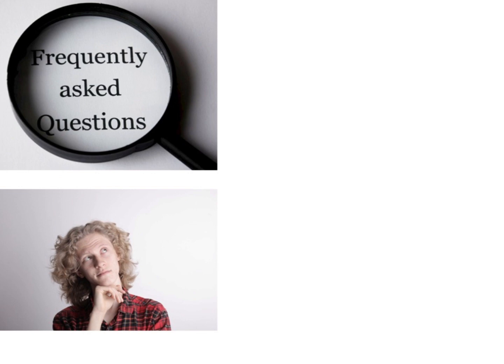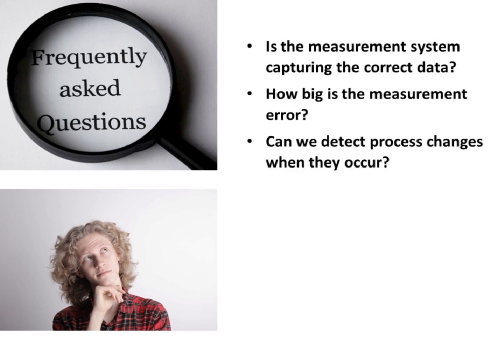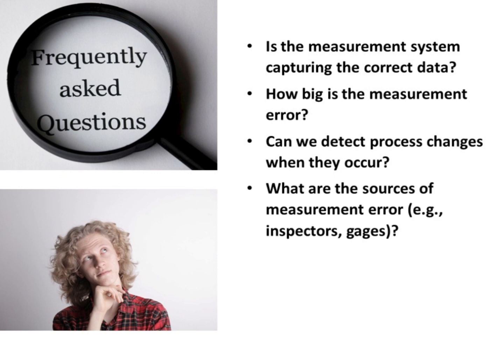If there are errors in our measurement system, we will be making decisions based on incorrect data. We could be making incorrect decisions or producing non-conforming parts. Process owners should ask themselves the following questions to better understand the capability of the measurement system: Is the measurement system capturing the correct data? How big is the measurement error? Can we detect process changes when they occur? What are the sources of measurement error, such as inspectors and gauges? Is the measurement system stable over time?